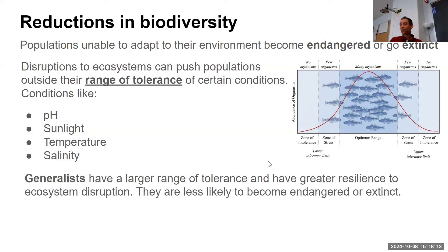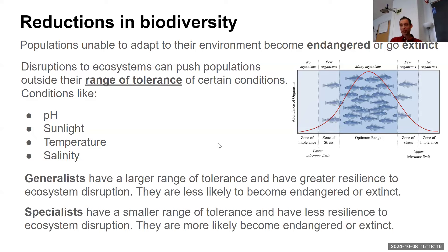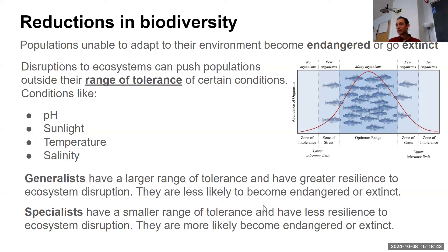Generalists tend to have a wider range of tolerance — they can survive larger changes to conditions like pH, sunlight, temperature, and salinity, so they can survive in many different conditions and are less likely to become endangered or go extinct. Specialists are the opposite: they have a very narrow range of tolerance, needing specific pH, food source, or temperature, and can easily reach their zone of intolerance, making them much more likely to become endangered or go extinct.